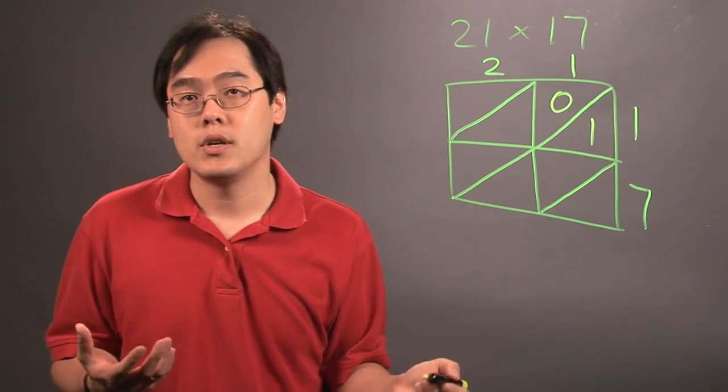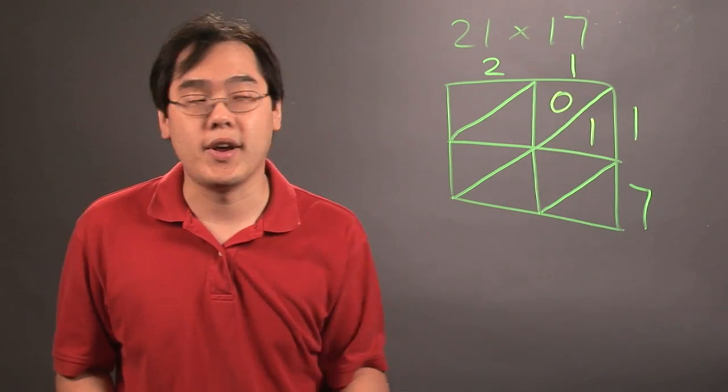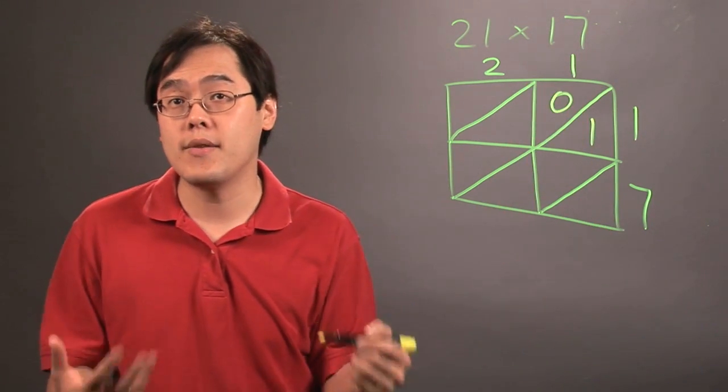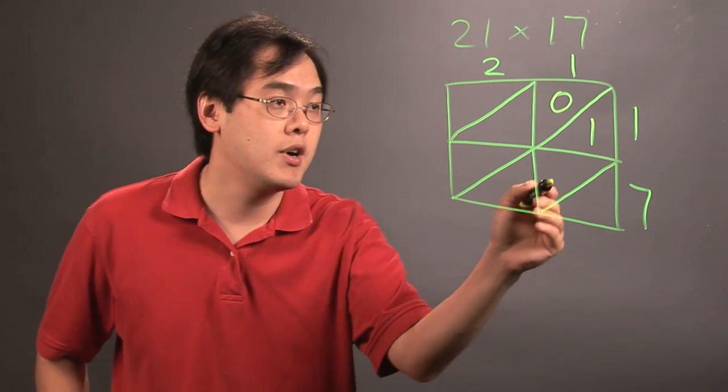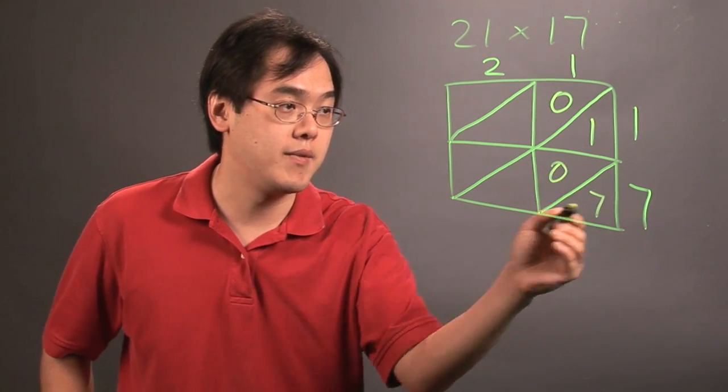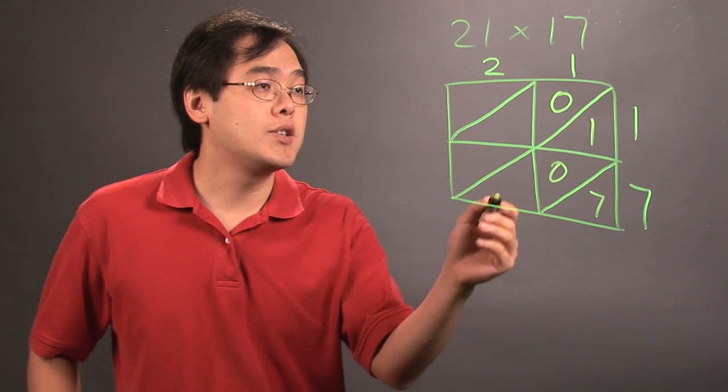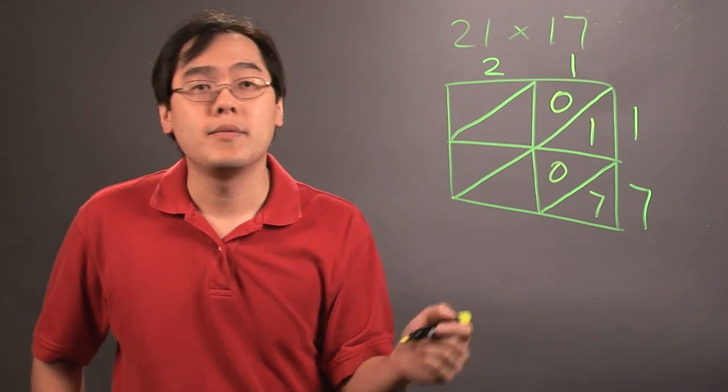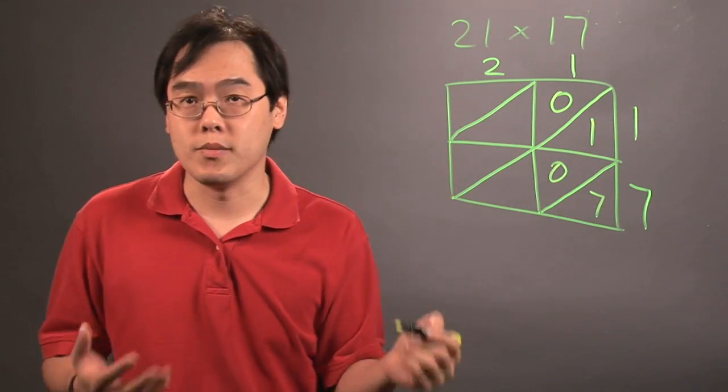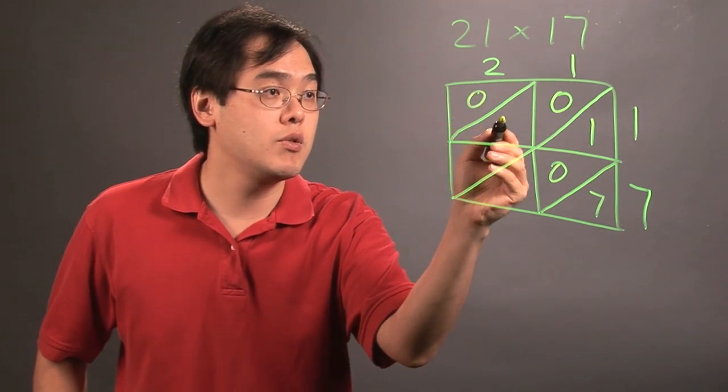Now, when it comes to one times seven, it's the same kind of idea, because one times seven is seven, but because you want to write it as a quote-unquote two-digit number, you'll write it as zero, seven. So you want to repeat with the two. Two times one is going to be two, so it's going to be zero, two.